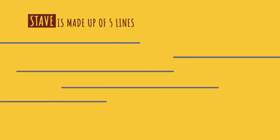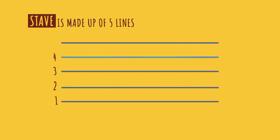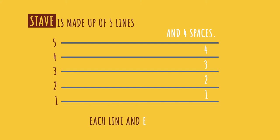The stave is made up of 5 lines — 1, 2, 3, 4, 5 — and it has 4 spaces — 1, 2, 3, 4 — counted from the bottom. Each line and each space represents a note.